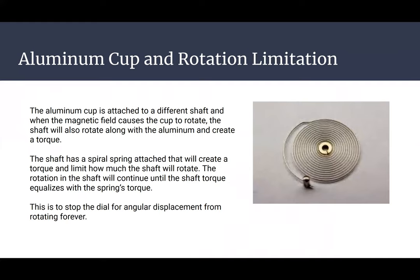So the aluminum cup, after it's being rotated, it will have a shaft connected to it, a separate shaft from the shaft that's connected to the magnet, and that shaft will rotate when the aluminum cup rotates. And this will create a torque, and that torque will be limited by this spiral spring, and it'll limit how much the shaft will rotate. The rotation in the shaft will continue until the shaft torque equalizes with the spring's torque. This is to stop the dial for angular displacement from rotating forever.